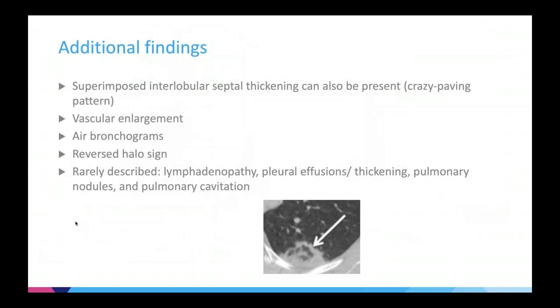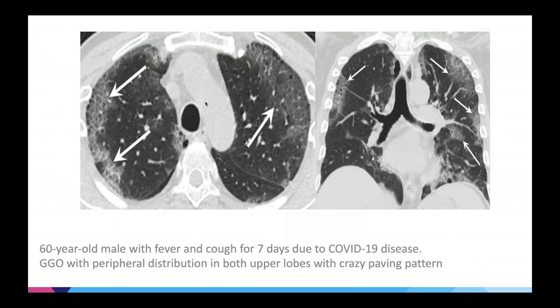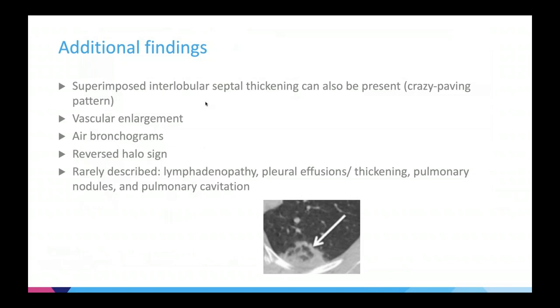I should mention that most descriptions have been coming from Chinese series, with enormous literature from China describing chest X-ray and mostly chest CT findings. There are very few papers from Italy and the US, though that's starting now. There have also been descriptions of vascular enlargement in affected lung areas, air bronchograms, and reverse halo sign. Interestingly, there is very little description of enlarged lymph nodes in COVID-19, which is mysterious given the highly activated immune system. Pleural involvement, nodules, and pulmonary cavitation are also rarely described.